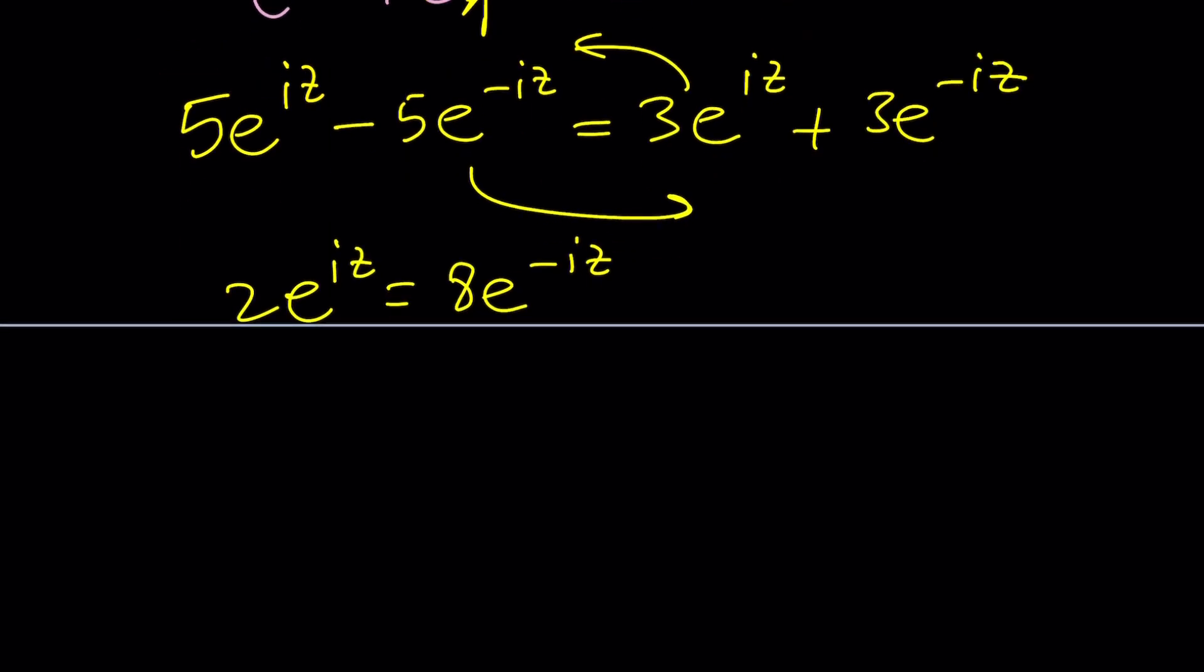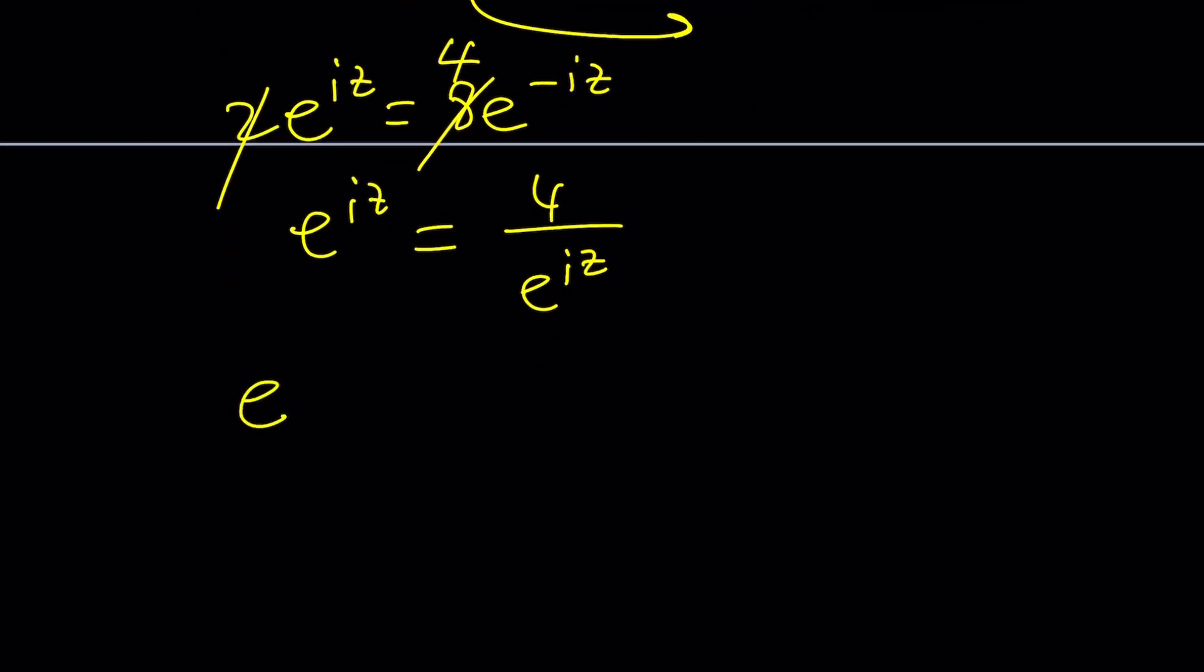And then finally, we can go ahead and cross out the 2, divide by 2, and then write this as 4 over e to the iz. And cross-multiply again, this gives us e to the 2iz, because iz plus iz, iz. Do you see what iz?